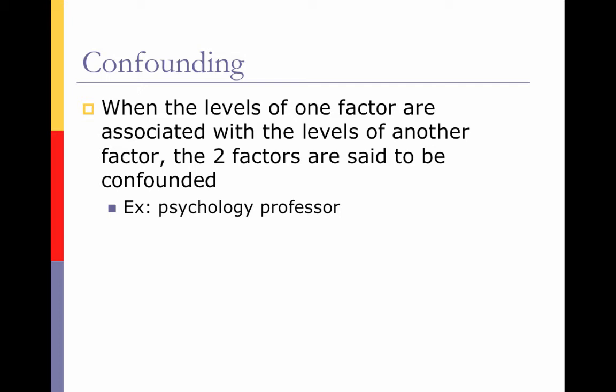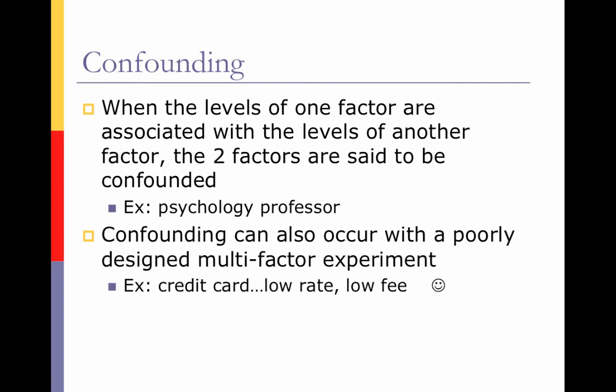A better approach would be to teach the same class in the same semester — one section with the monotone and the other animatedly — so the semester won't affect the results. Confounding can also occur with a poorly designed multi-factor experiment. For example, a credit card company mailed offers: one with a low rate and no fee, and another with a high rate and a high fee. Obviously more people signed up for the low rate with no fee. The issue is they didn't have enough treatment groups — they should have also offered a low rate with a high fee and a high rate with no fee to get more accurate results.